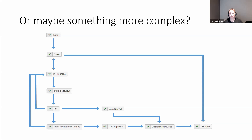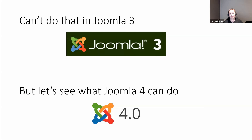And you can take it one step further — what if you want a really complicated workflow where a piece of content moves through a variety of states, going back and forth, skipping steps, and all sorts of fancy things? This is an example of a possible complex workflow. We obviously can't achieve anything that sophisticated in Joomla 3, but in Joomla 4, now that we've got the new workflow feature, we can do some really fancy stuff.